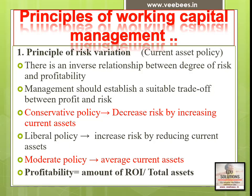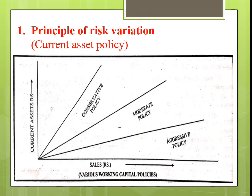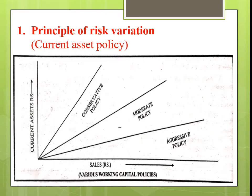Profitability can be measured as return on investment divided by total assets. In the diagrammatic representation of the principle of risk variation — the current asset policy — there are three lines: conservative policy, moderate policy, and aggressive policy (which is the liberal policy). A firm following aggressive policy will have increased sales at a lesser level of current assets. In the case of a conservative policy firm, sales increase with a high level of current assets.